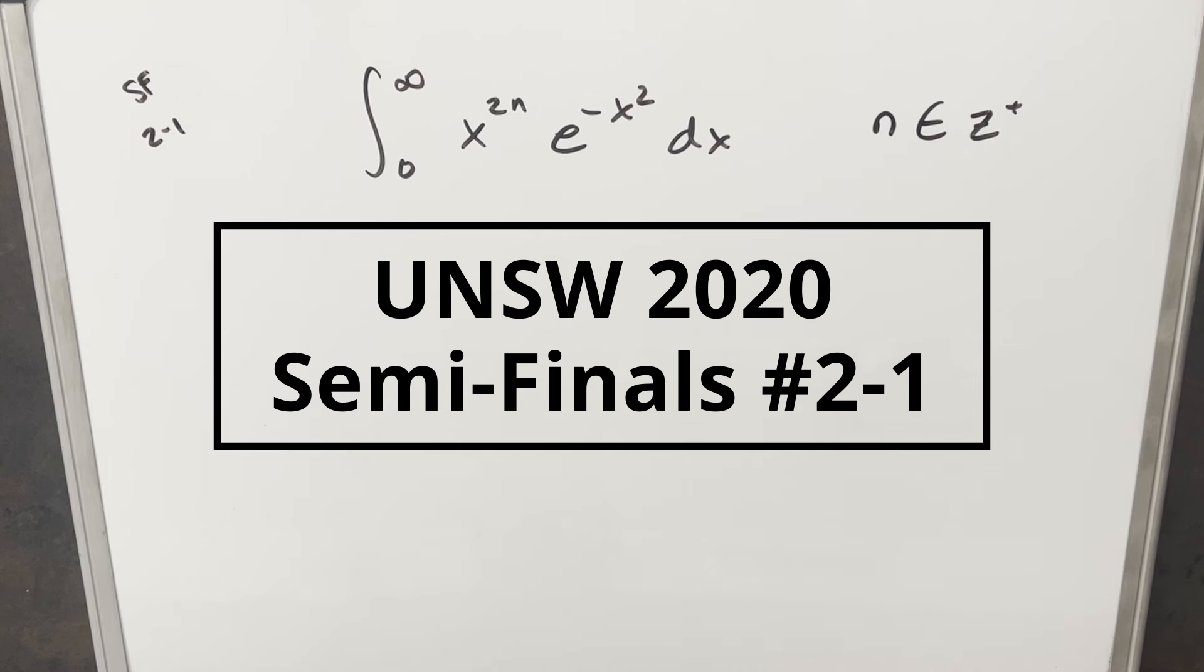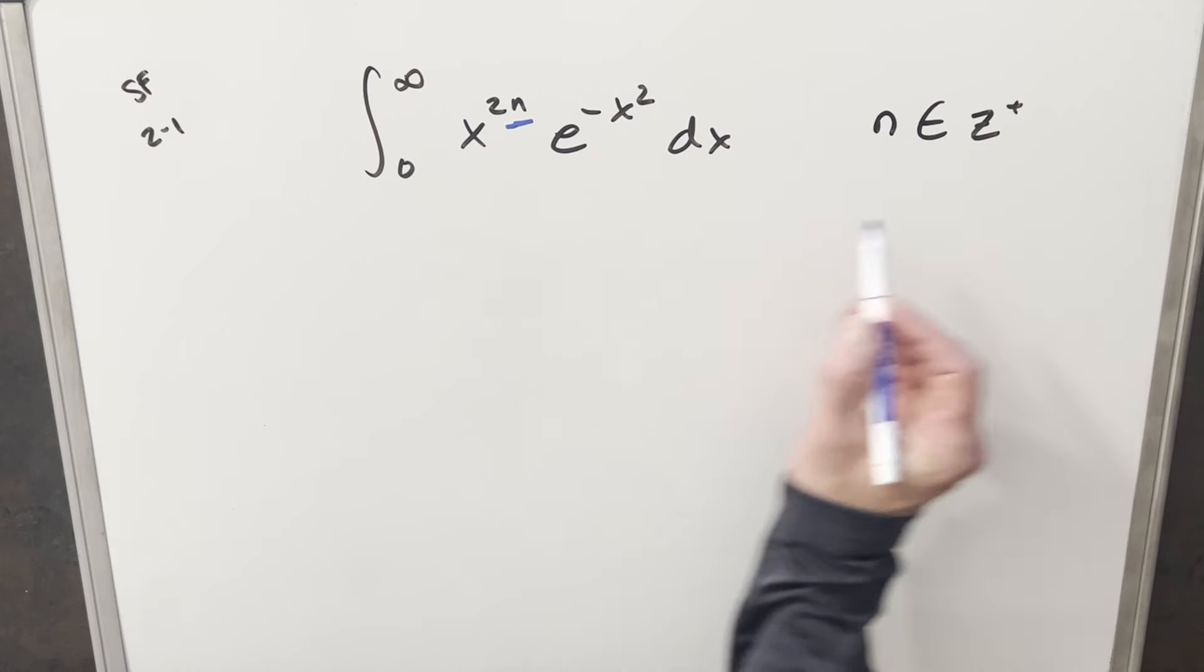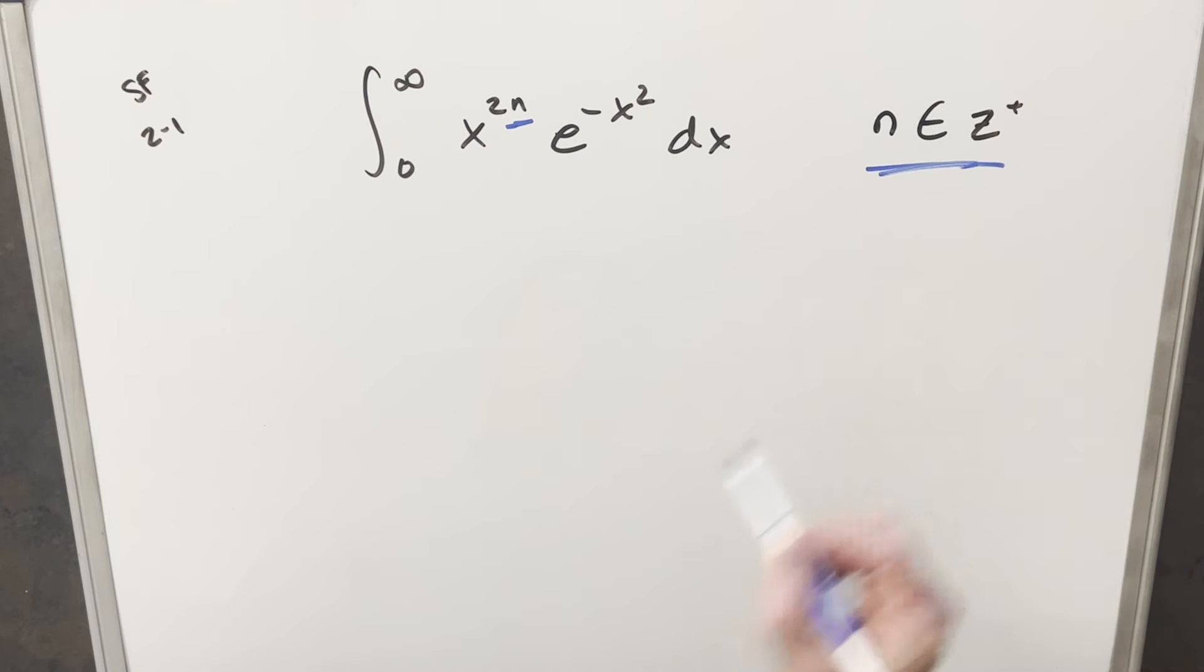We have the integral from zero to infinity, x to the 2n, e to the minus x squared dx. And just note for this n value, we have this condition over here that n is going to be a positive integer.